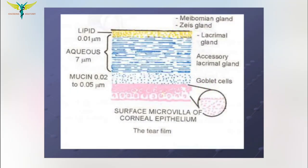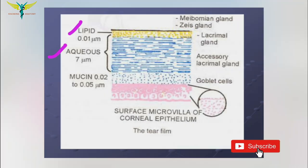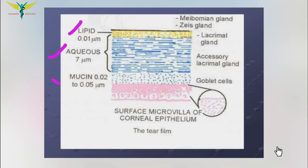The tear film is made up of three layers: an oil layer or lipid layer, the water layer or aqueous layer, and a mucin layer. These three components together form our tear film.